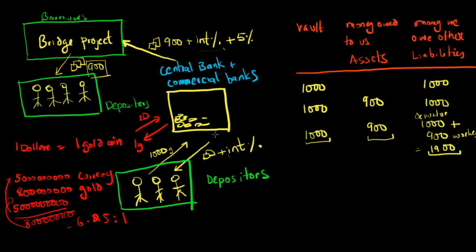So you might be thinking, what is the point of having a gold standard if my currency isn't 1 to 1 backed by gold? And my response to that would be that if you felt that this ratio was getting too high, so for example, in our example with the central bank, the commercial banks and the bridge project, the ratio of money supply to the amount of gold was 1,900 divided by 1,000, which equals 1.9 to 1.